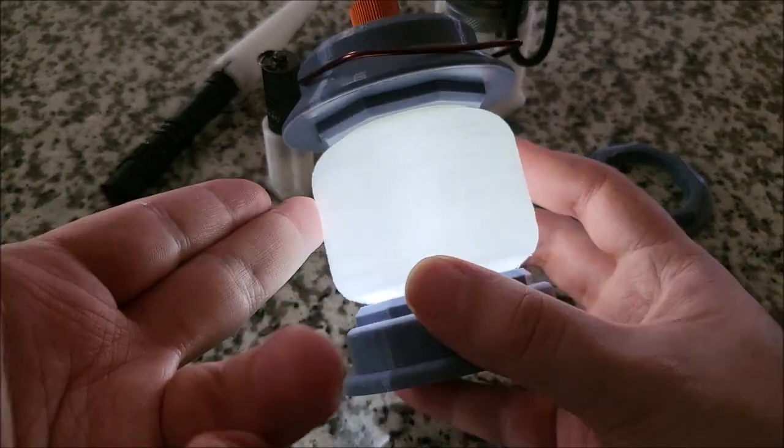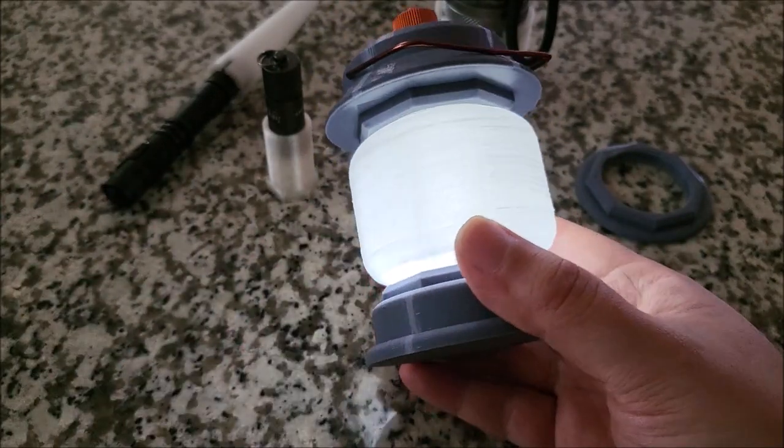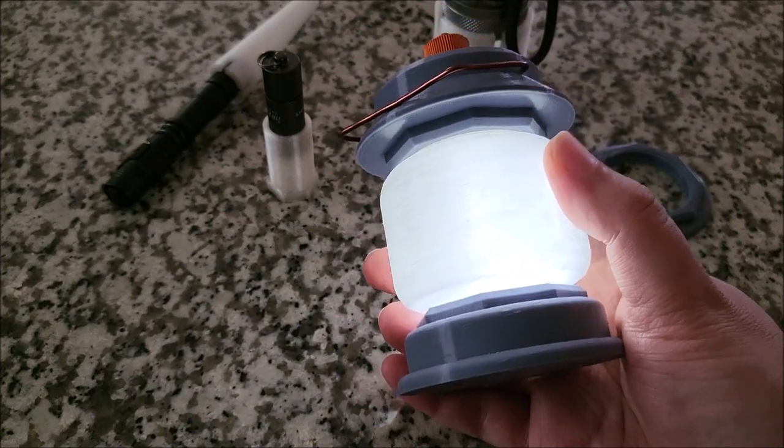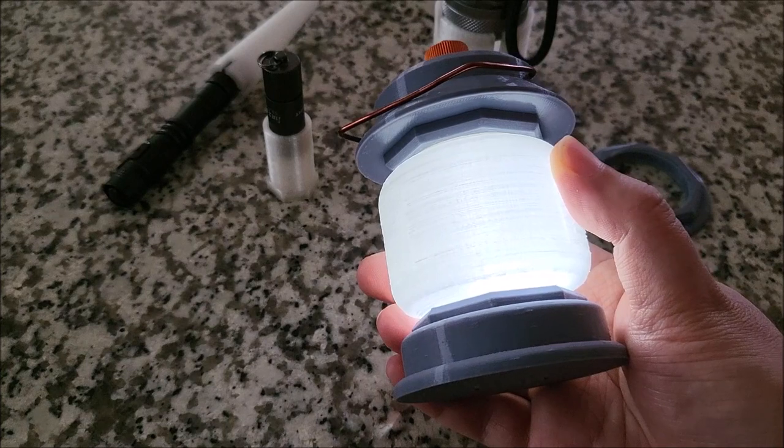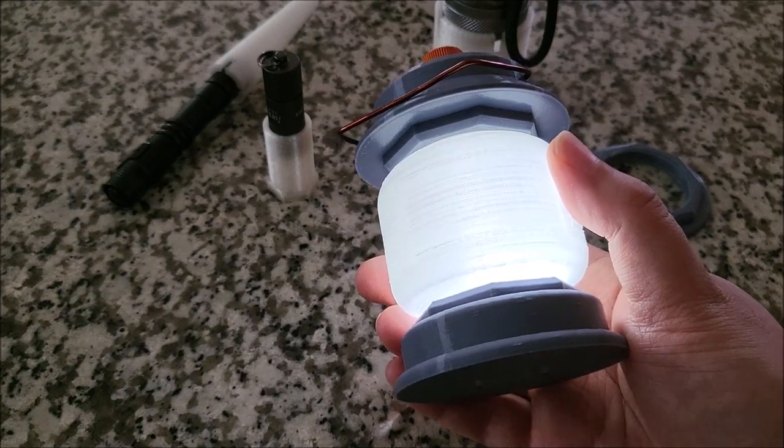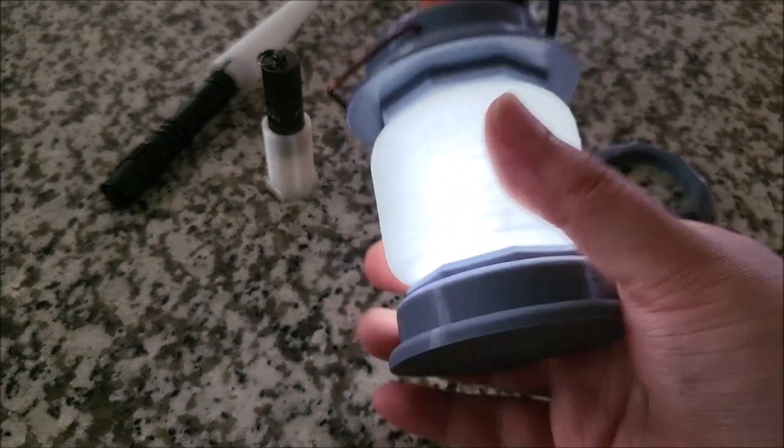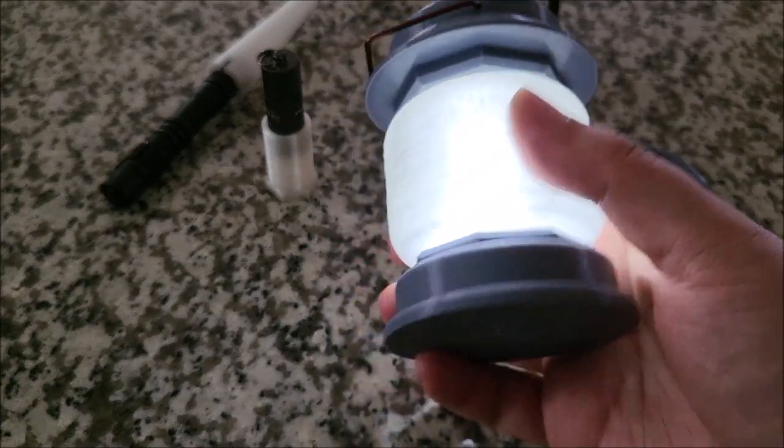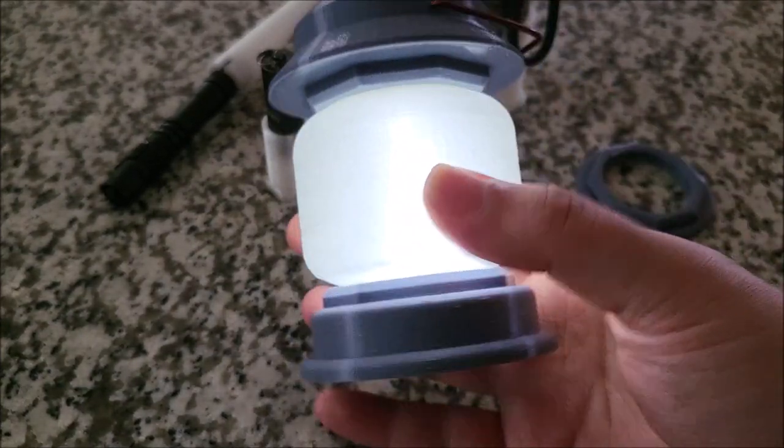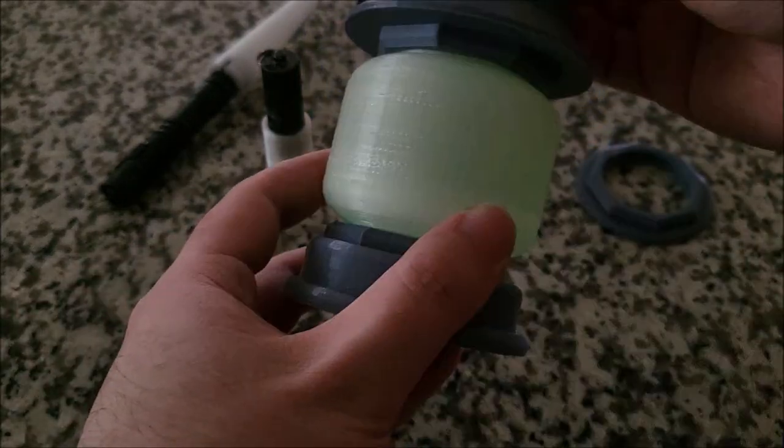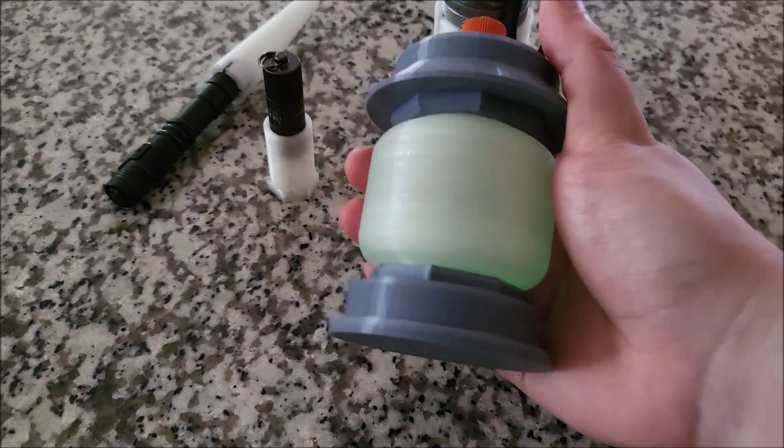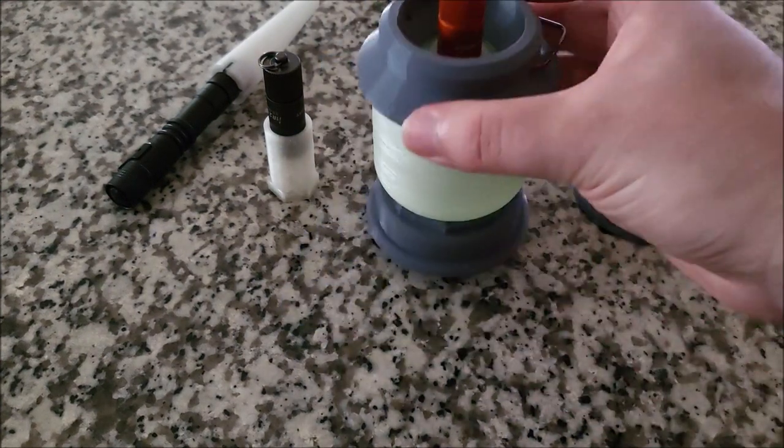My suggestion is to get the glow in the dark filament. Just be careful, it does tend to wear your nozzle a bit because it's more abrasive than regular PLA or ABS. But just grab a new nozzle and just use that one nozzle for abrasive filaments and you can print your own out and it'll glow really well for a few hours after you just set it there on the table and power it off.